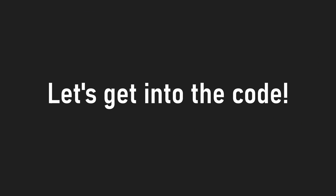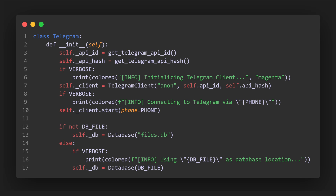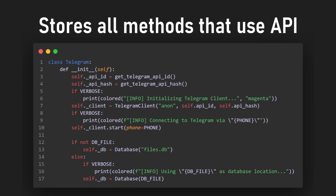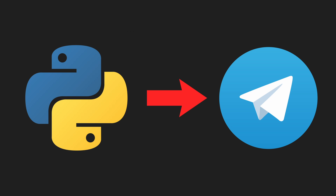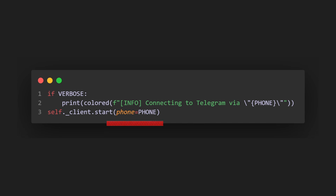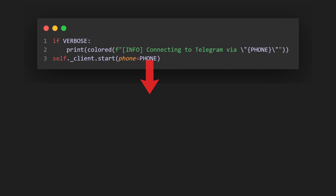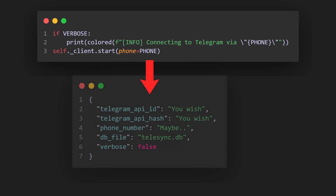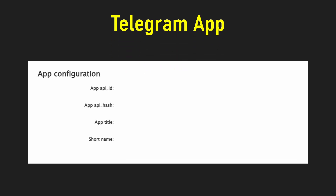Enough said, let's get into the actual code. First, I created a Telegram class which would store all methods that interact with the API. To connect to Telegram through Telephone, the phone number parameter is needed, and we get this from the config file which contains all our sensitive information. We then also need to create an app from the dashboard which will provide us with the app ID and hash.